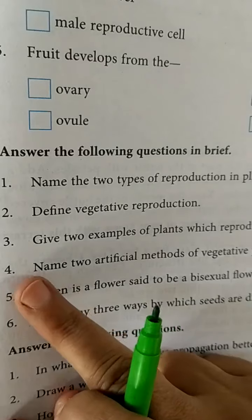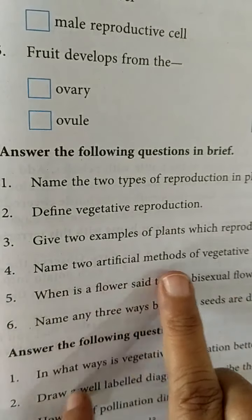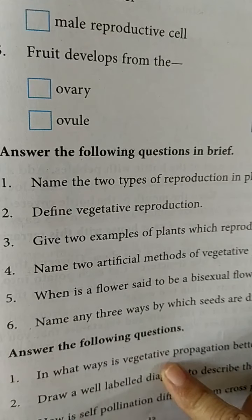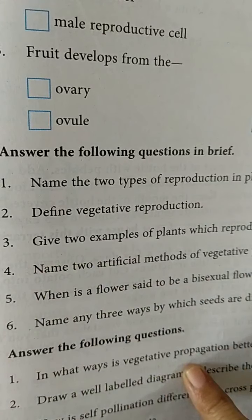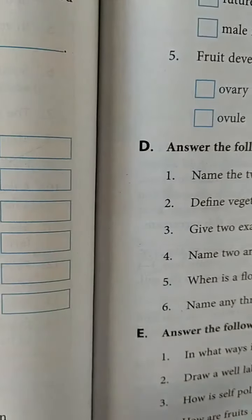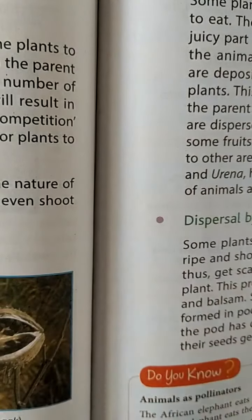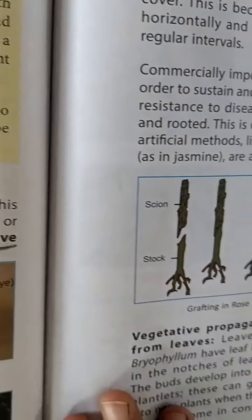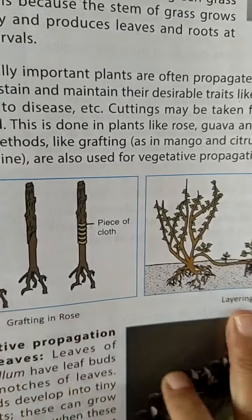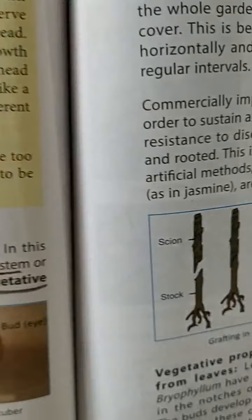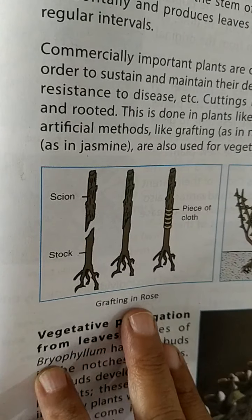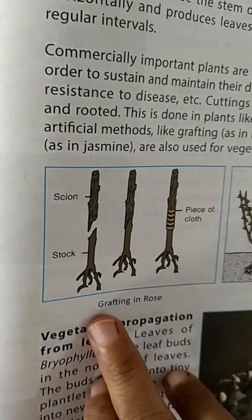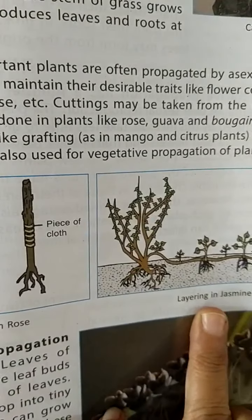Fourth question: name two artificial methods of vegetative propagation from stem. The two artificial methods are layering and grafting, given on page 133 — grafting in rose and layering in jasmine. So simply write down grafting and layering.